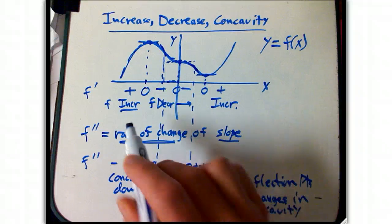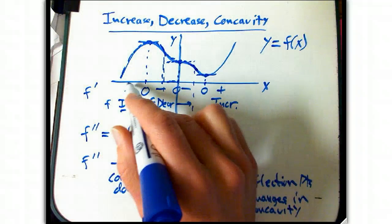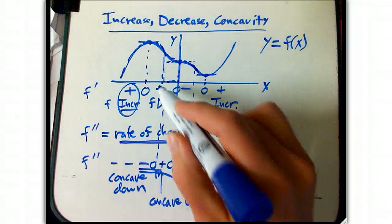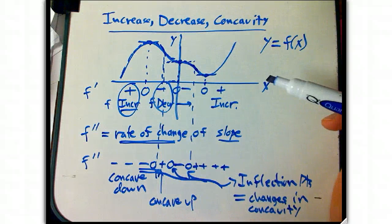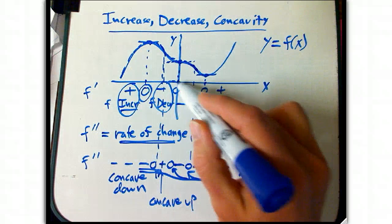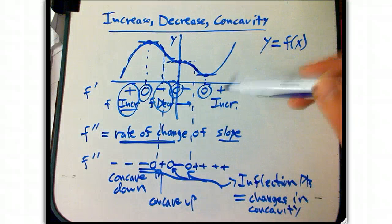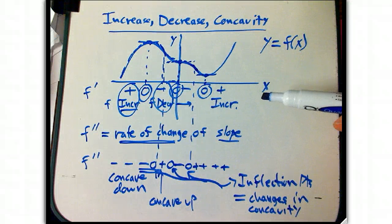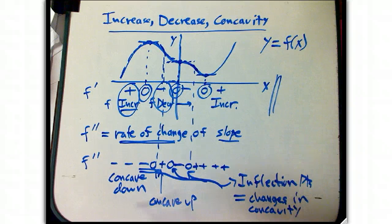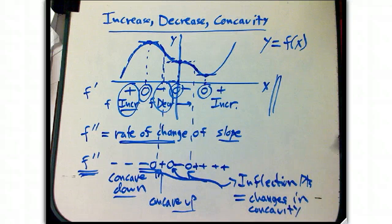So to review, f prime, when it's positive, function's increasing. When it's negative, function's decreasing. When it's zero, that's a stationary point. And we're going to want to analyze those a little bit further, but we won't do that quite yet. That's really something we've already known for a long time.